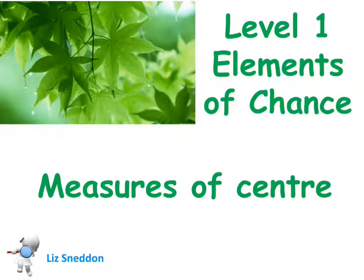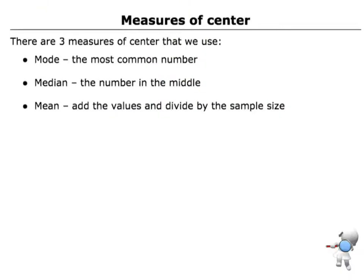Let's have a look at measures of center and the elements of chance. When we talk about measures of center, there's three main things that we look at. We've got a mode, which is our most common number, our median, which is the number that's in the middle, and remember for that one you have to organize the data from smallest up to biggest. And then for the mean, you want to add all the numbers up and divide by how many you have.